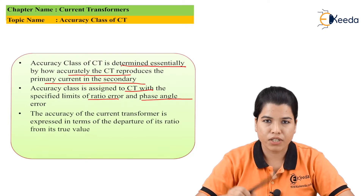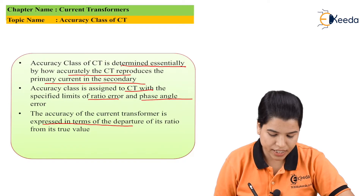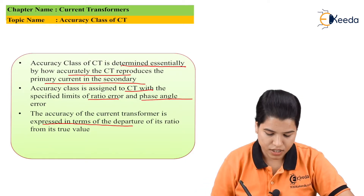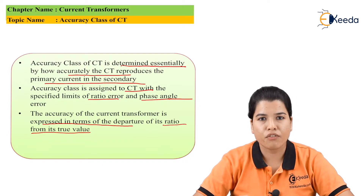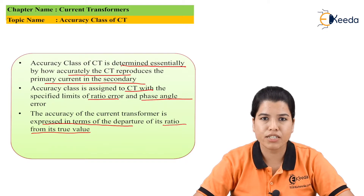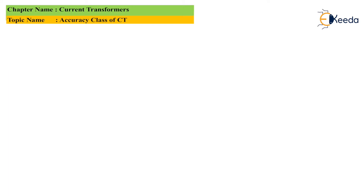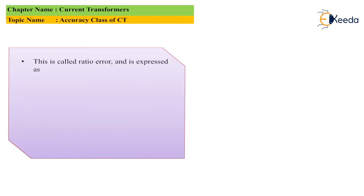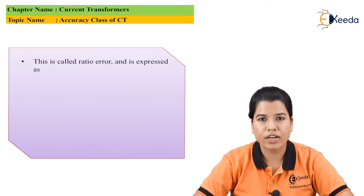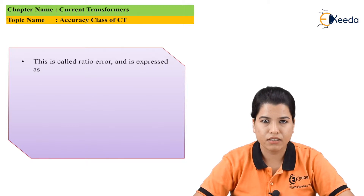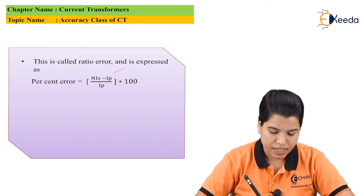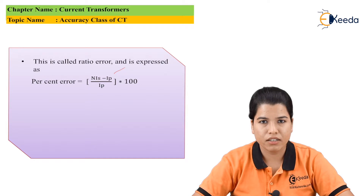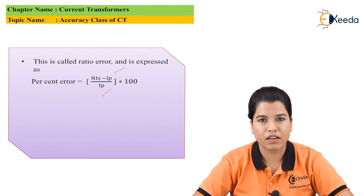The accuracy of a current transformer is expressed in terms of departure of its ratio from its true value. Whether there is a departure of the ratio from the true value to the actual value — depending on that, the accuracy class of the CT can be specified. This phenomenon is basically called the ratio error, and it is expressed by the formula: percentage error = (N × Is − Ip) / Is × 100.